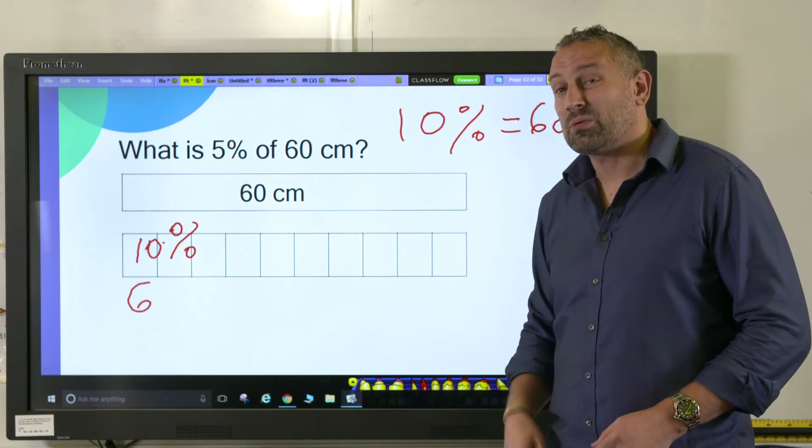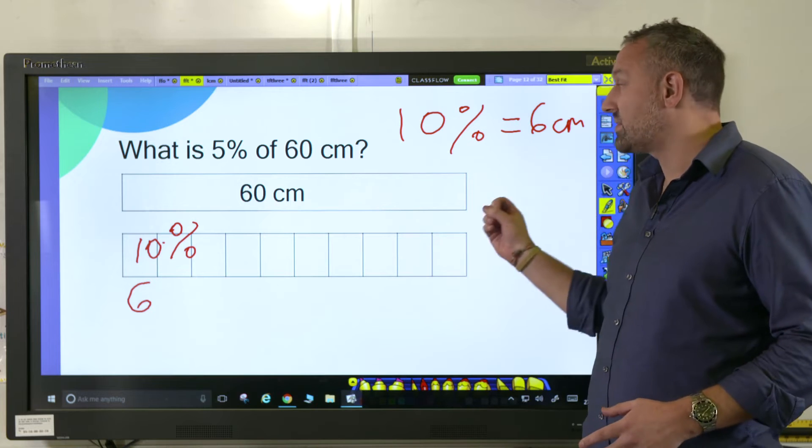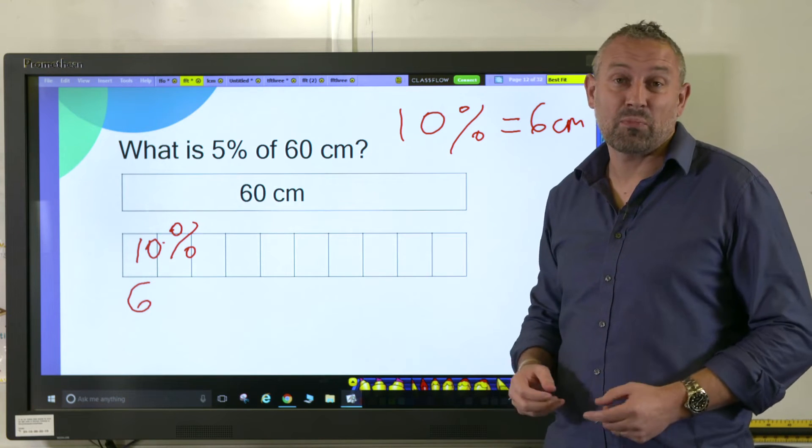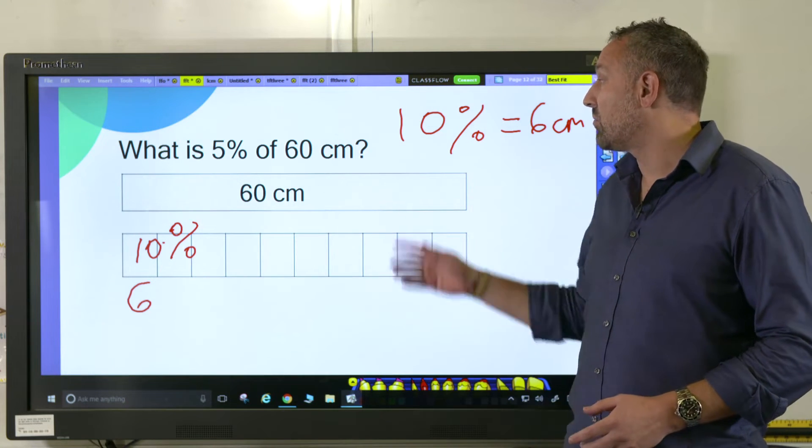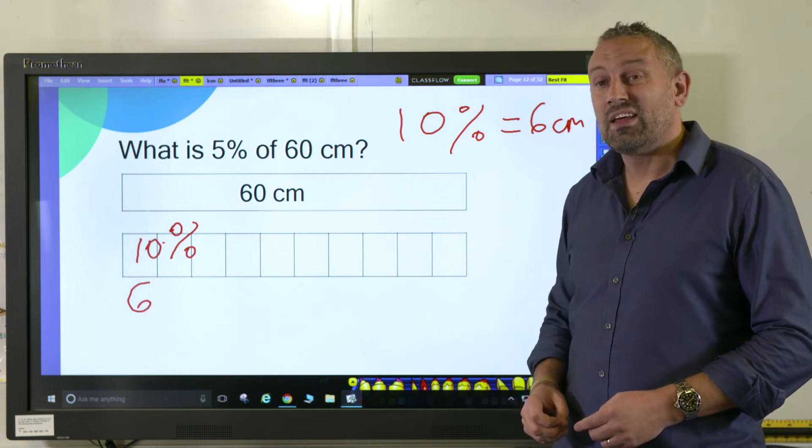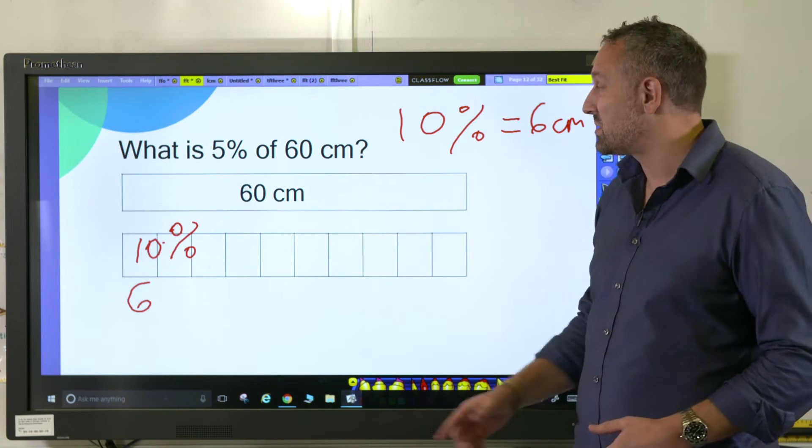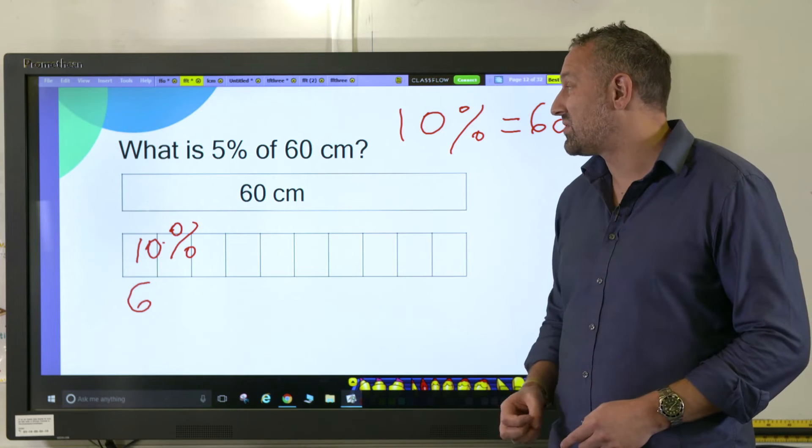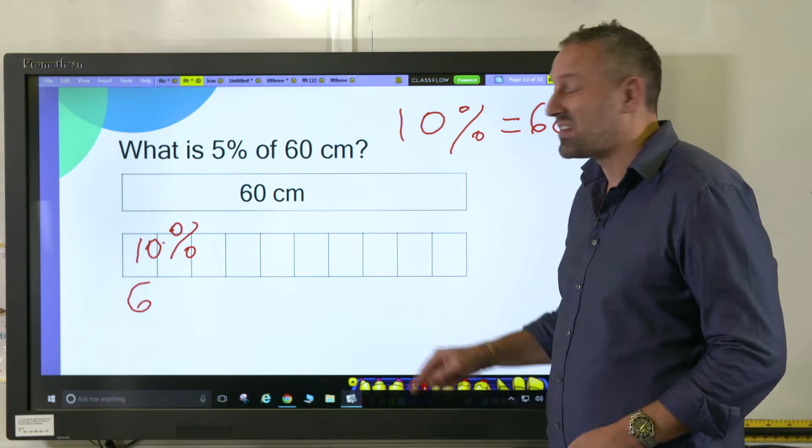A valuable question to ask the children is: if 10 percent is six, what is five percent? Hopefully they can tell you that five percent is half of ten percent, and therefore half of six centimeters is three centimeters. What is 5 percent of 60 centimeters? The answer is three centimeters.